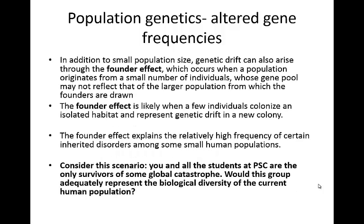An additional way we might see genetic drift is through the founder effect. In this case, the population is going to originate from a small number of individuals, and their gene pool may not reflect that of the larger population from where the founders came. We're likely to see this founder effect when a few individuals colonize an isolated habitat, representing genetic drift in the new colony.